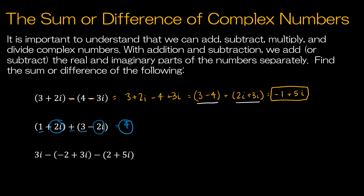Let's look at our last question. The real part comes first, so I'm going to ignore the 3i at first. For the sake of not messing up my negatives, I'm going to change the signs accordingly. Now I'm going to add the real parts together. I have positive 2 and I have negative 2, so I have 0 for the real part. Then I have plus 3i and I have minus 3i and then I have minus 5i. So my answer is negative 5i.